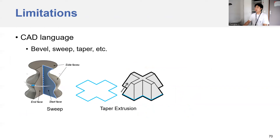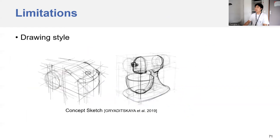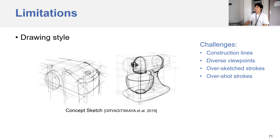Of course, there are several limitations of our method. First, we do not support many other operations such as bevel, taper, and sweep — the main challenges come from operator recognition and parameter fitting. Second, we currently only support strokes specific to our interface instead of common concept sketches in product design. The generalization is constrained by many factors, for example the large amount of construction lines and over-sketched and over-shoot strokes. We would like to tackle concept sketches in the future.